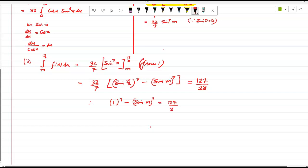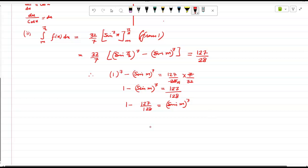Is equal to 127 over 28, into 7 over 32. So 1 minus sin m raised to 7, is equal to 127 over 128. So 1 minus 127 over 128 is equal to sin m raised to 7. So that's 1 over 128.